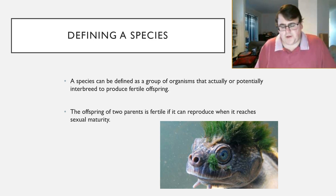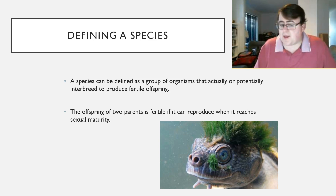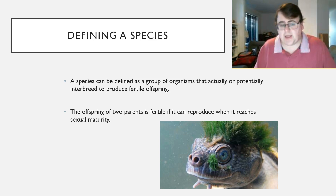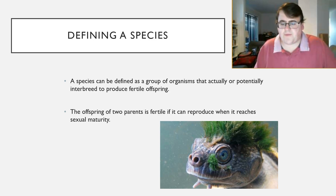First off, we have to be able to define what a species is. The best definition is that a species can be defined as a group of organisms that actually or potentially could interbreed to produce fertile offspring. The key there is they have to produce fertile offspring, so that offspring itself can go on and reproduce when it gets to the age of sexual maturity.